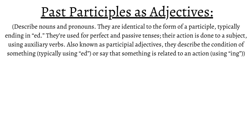In English, past participles as adjectives modify and describe nouns and pronouns. They are identical to the form of a participle, which typically ends in "-ed", hence they're derived from verbs. Although each one has a different form, they all behave the same as any other adjective. They're used for perfect and passive tenses, and their action is done to the subject of a phrase, using auxiliary verbs like "to be" and "to have".